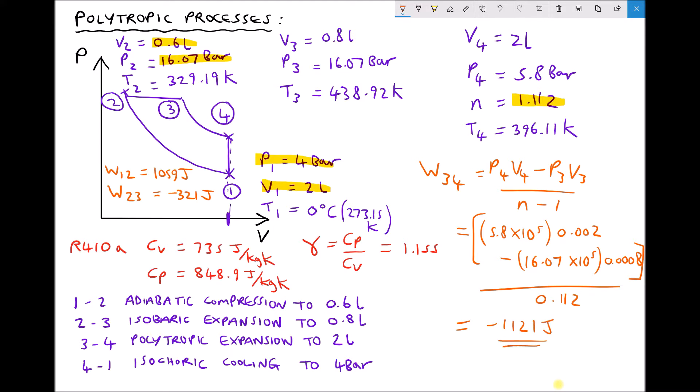So once again we note that it's negative because the gas is expanding, and we can transfer our value onto our diagram. W34 equals minus 1121 joules.